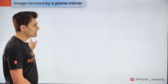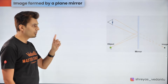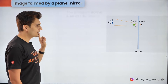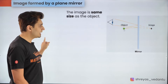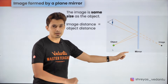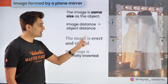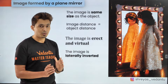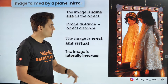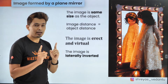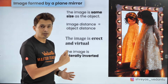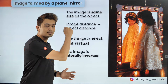Now let's discuss the different properties of images formed by a plane mirror. The image size and the object size are always the same. Not just that, the image and the object are equidistant from the mirror. Also remember that the image formed by a plane mirror is virtual — it's erect and it is laterally inverted, meaning the left of the person is the right of the person inside the mirror.